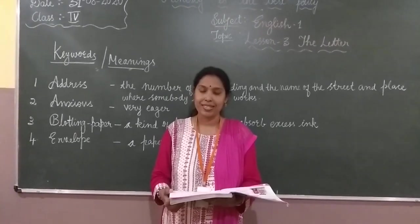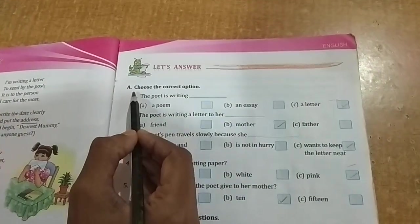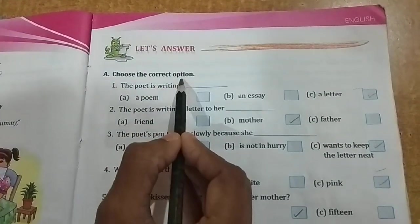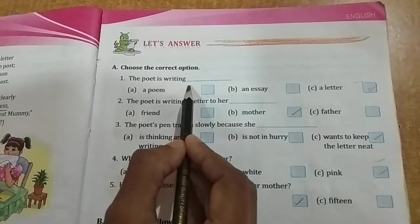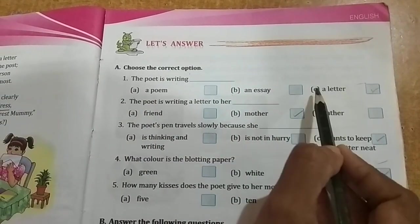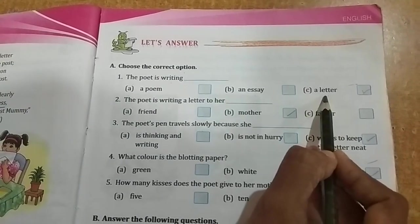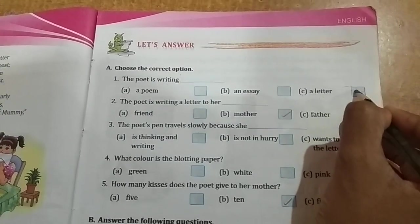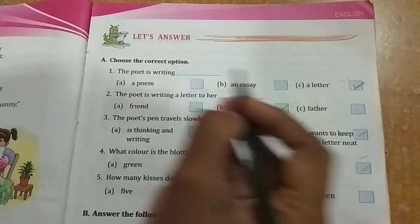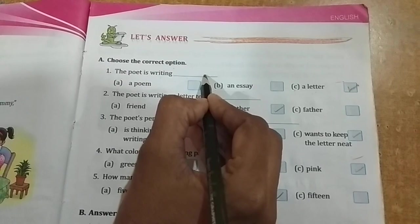Now we will move on to the textbook exercises. All of you take out page number 21. TB exercises, section A: Choose the correct option. The poet is writing — dash. A: a poem. B: an essay. C: a letter. What was the poet writing? A letter. So put a tick on option C, and write in the blank: The poet is writing a letter.